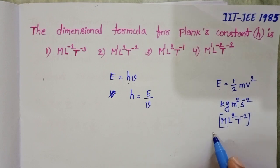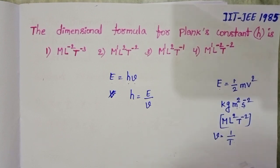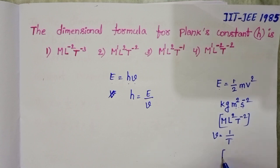And frequency is the reciprocal of time period. So the dimensional formula of frequency is T⁻¹.